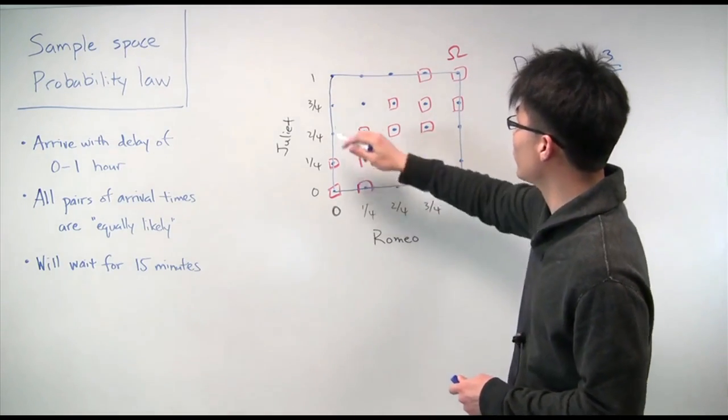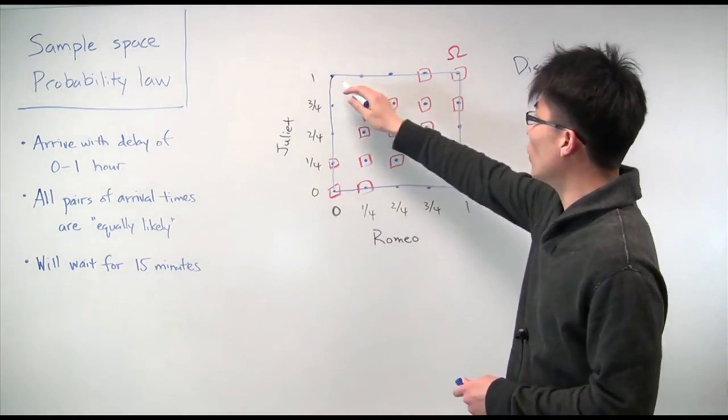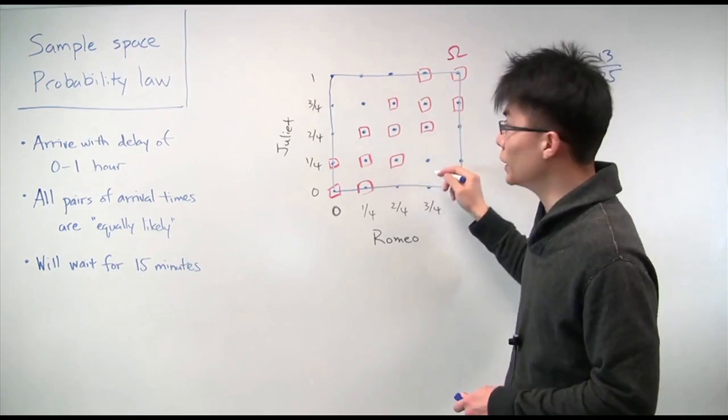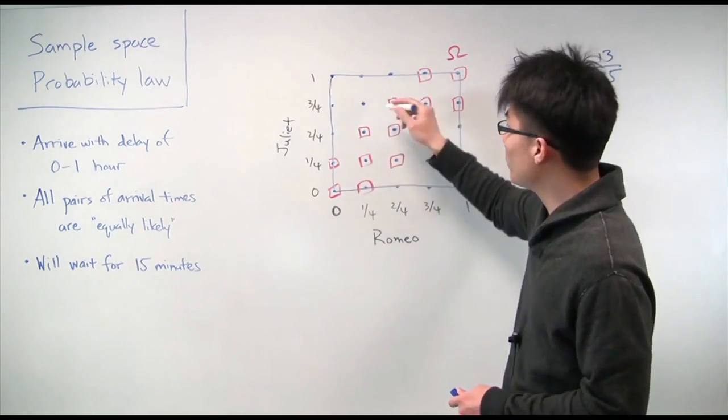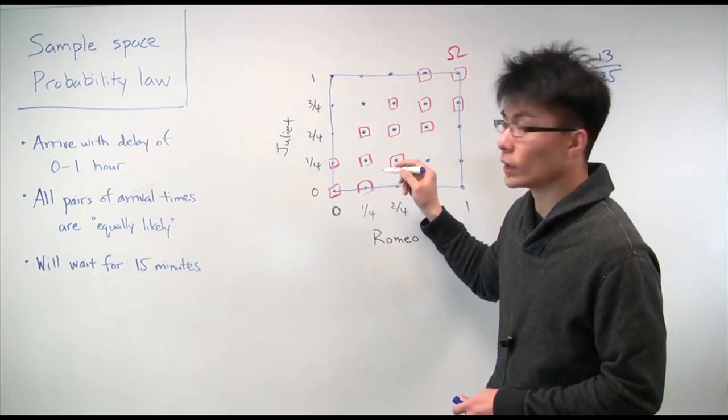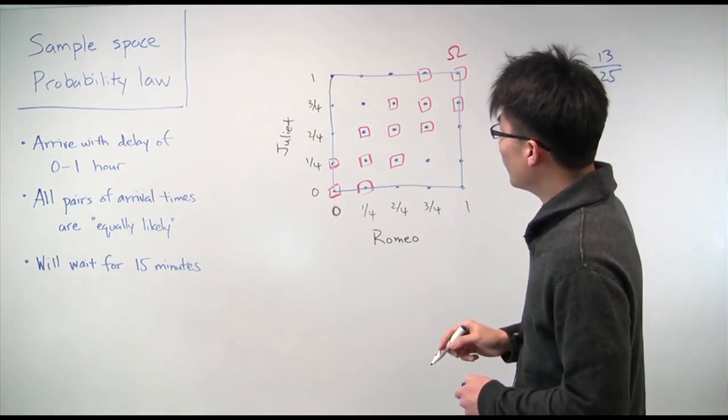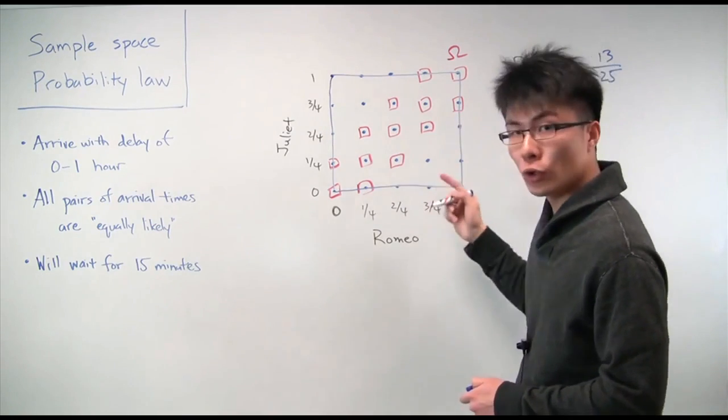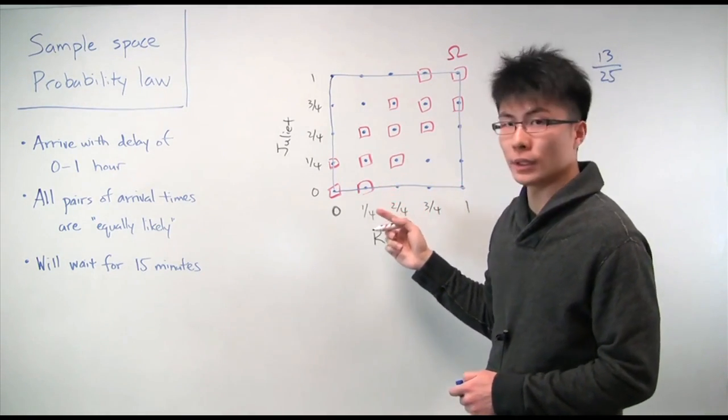So now our new sample space is actually just, instead of only these 25 points in the grid, it's this entire square. So any point within the square could be a possible pair of meeting times between Romeo and Juliet. So that is our new sample space, our new omega. And now let's assign a new probability law.